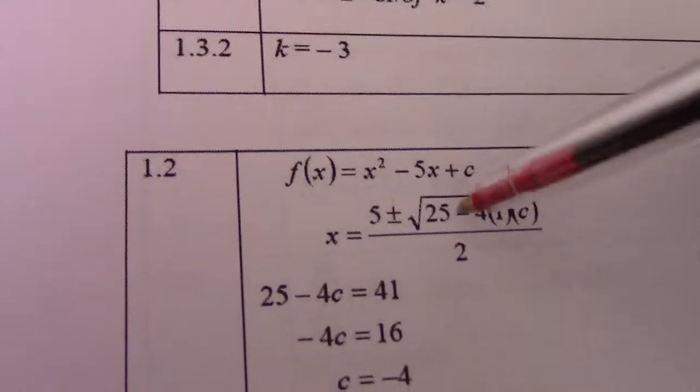If I use the quadratic formula, x equals -p ± √(p² - 4ac) over 2a. So my p value, -p would become -(-5), which would become positive 5 ±. I get 5², which gives me 25, minus 4 times my a value which is 1, and my c value which is c. That simply becomes 2 times a.